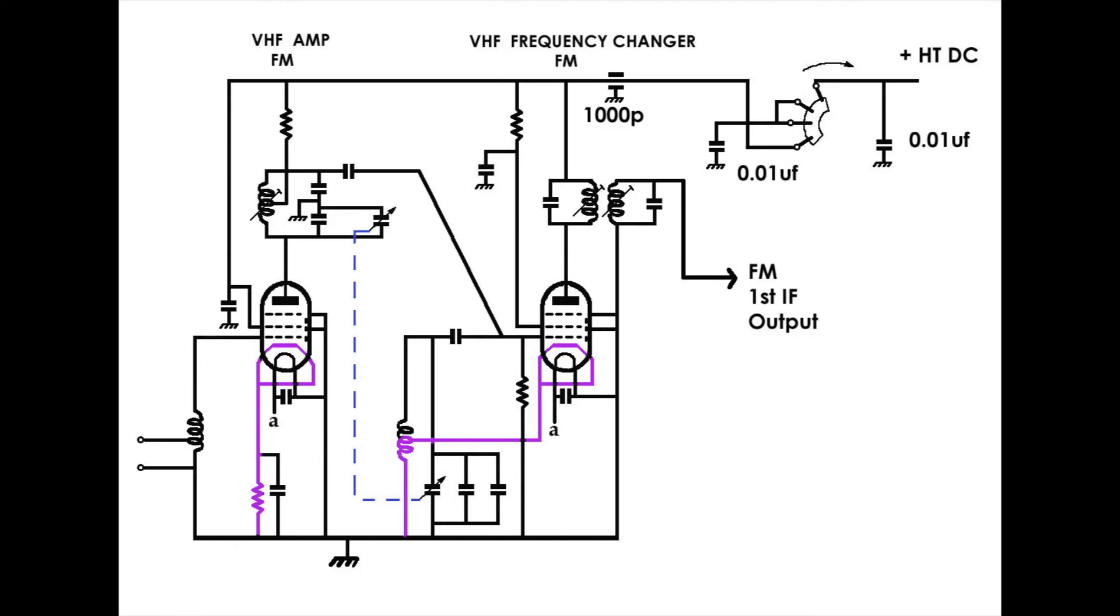The cathode of the valve on the left is coupled to ground via the resistor. That has a value of 390 ohms. And that resistor is decoupled by the capacitor to the right of it. And that is again a 3000 pF capacitor. And you can think of it in terms of the capacitor holding the top of that resistor at a steady voltage level. Together these components bias the valve.